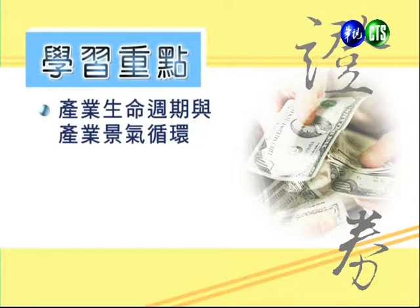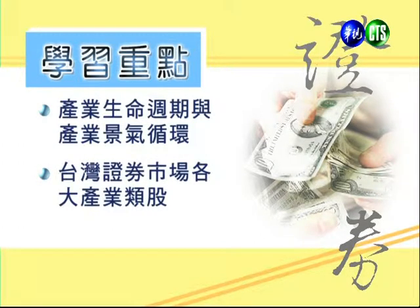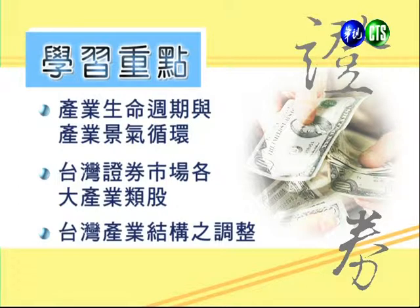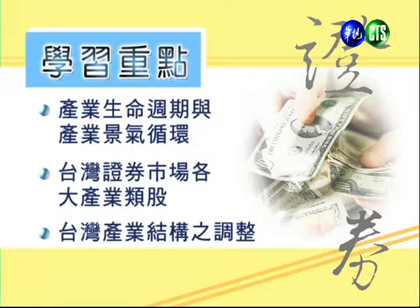就從最上面的總體經濟來到產業，之後到個別公司的財務報表分析。在這個講次當中我們針對三個學習重點：第一點是產業的生命週期以及產業循環的各類型類股；第二個重點是台灣證券市場各大產業類股；第三個重點是台灣產業結構的調整。